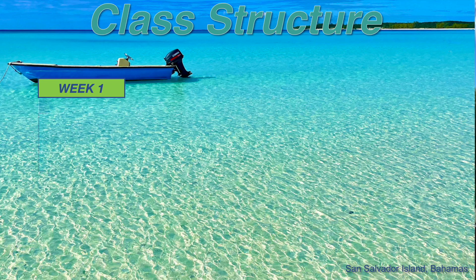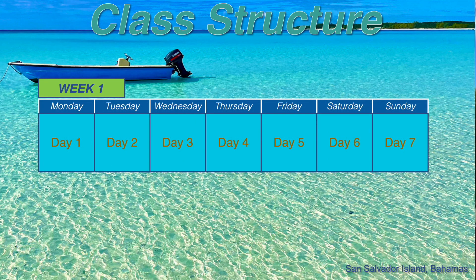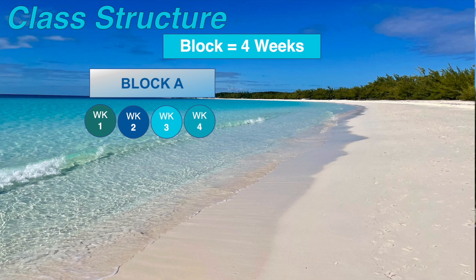Now I want to tell you about the structure of the class right down to the daily and weekly level — what you can expect over these next 16 weeks. Every week begins on Monday and runs through Sunday at midnight. Day one will be Monday, and Sunday at midnight is the due date for all assignments from that week, meaning anything in the week one folder will be due at the end of that first week. The course is divided into four blocks of four weeks for a total of 16 weeks.